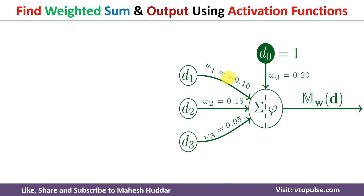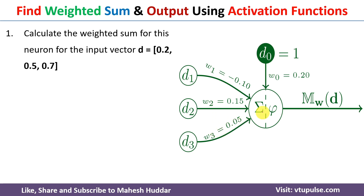In this case, we have been given a single layer perceptron network with three inputs: D1, D2, and D3. D0 is a bias in this case. W0, W1, W2, W3 are the weights given to us. We need to calculate two things here. The first one is the weighted sum. To calculate the weighted sum, we need to know the value of this input vector: D is equal to 0.2, 0.5, and 0.7 is given.